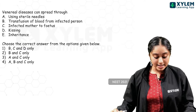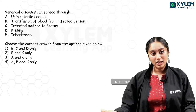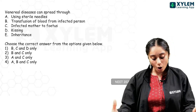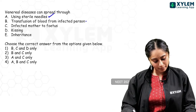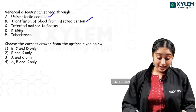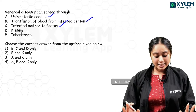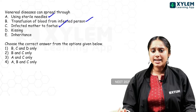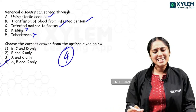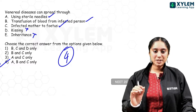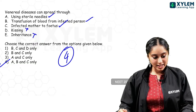NEET 2021: venereal diseases — this is the same as STDs, as NCERT notes you can call it a sexually transmitted disease or a venereal disease. STDs can spread through: use of infected/non-sterile needles, transfusion of blood from infected person, and from infected mother to fetus. Kissing and inheritance are not modes of STD transmission — those options are eliminated. Answer: A, B, and C only.